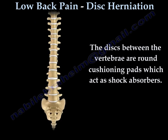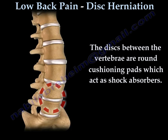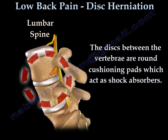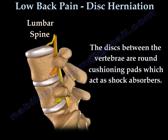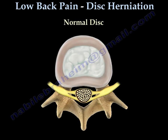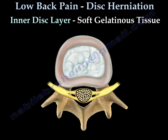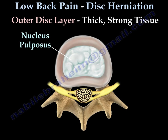The discs between the vertebrae are cushioning pads which absorb shock. In a normal disc, there are two layers: the soft gelatinous inner layer, called the nucleus pulposus, and an outer thick, strong layer called the annulus fibrosus.